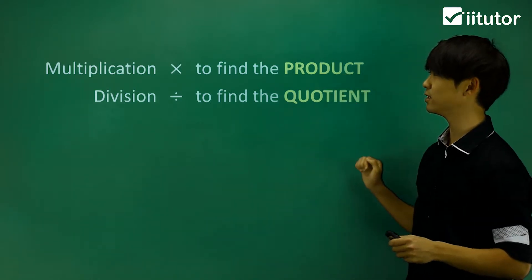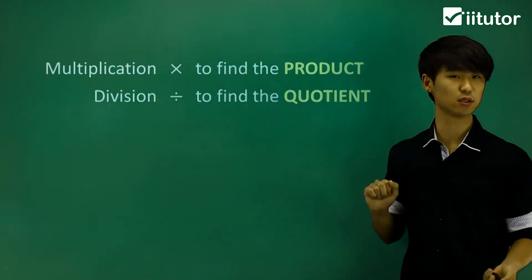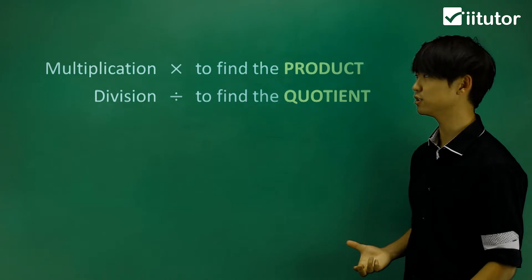These are the two terms that we need to know. Multiplication is to product and division is to quotient. So just familiarize yourselves with these terms.